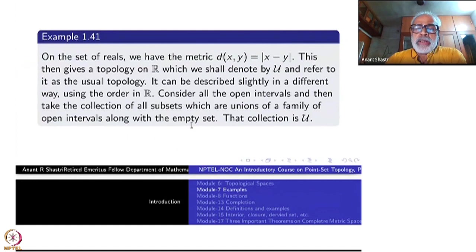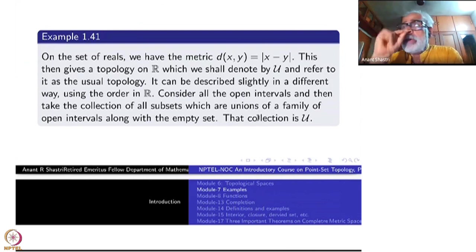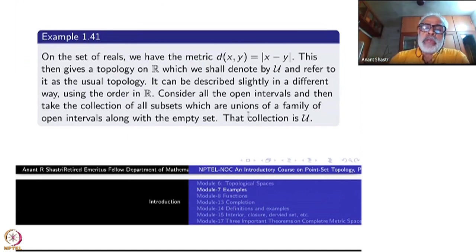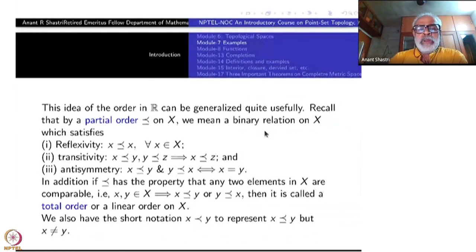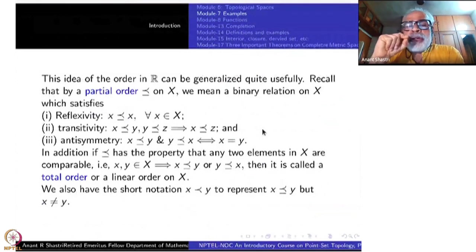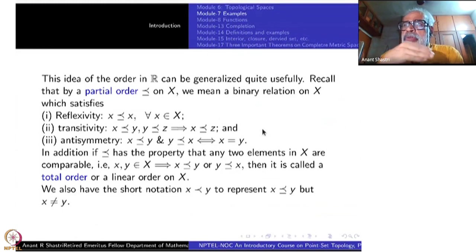I don't want to refer to the metric — I want to talk only about intervals. It's the same coin, I'm just looking at a different side. That collection is exactly the usual topology. But why bother looking at it a different way? The whole idea is that you can forget about the additive and multiplicative structures of ℝ and just look at the order itself — that is enough to determine the topology.